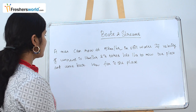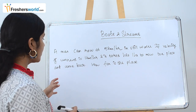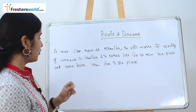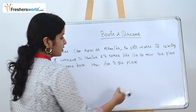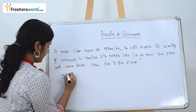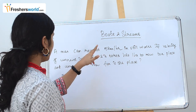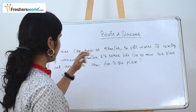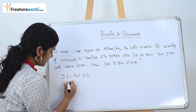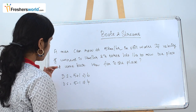The next question is: a man can row at 5 kilometers per hour in still water. If the velocity of the current is 1 kilometer per hour and it takes him 1 hour to row to a place and come back, how far is the place? For downstream: 5 plus 1 equals 6 kilometers per hour. For upstream: 5 minus 1 equals 4 kilometers per hour.